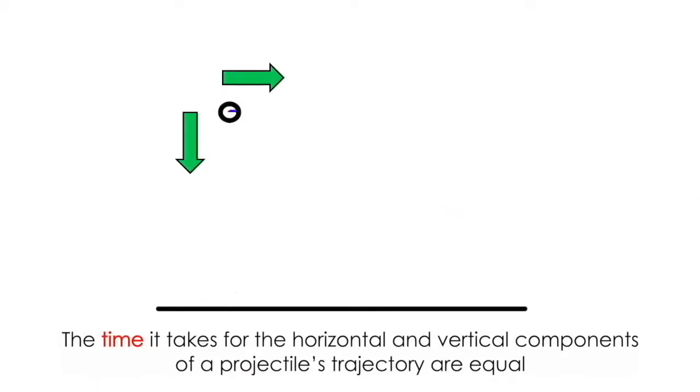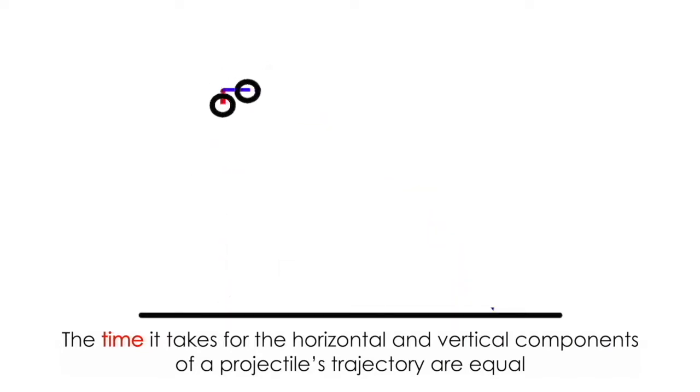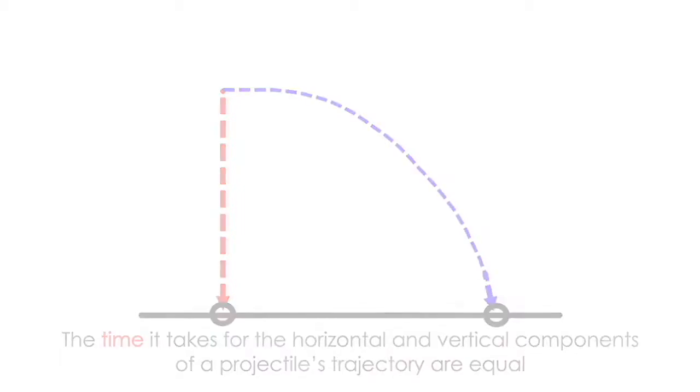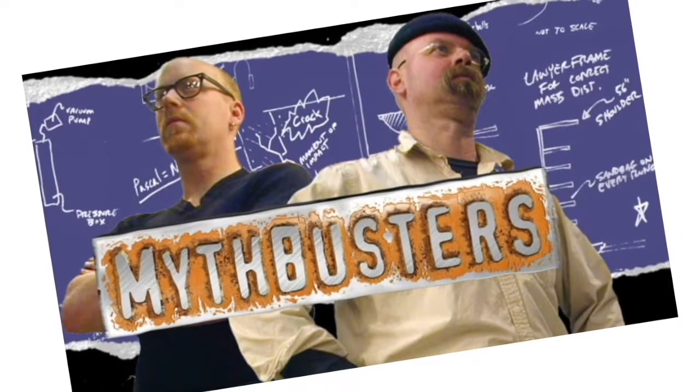A counterintuitive property of projectiles is that the time it takes for the horizontal and vertical components of a projectile's trajectory are equal. If you picture dropping a ball and throwing a ball horizontally, those two balls will hit the ground at the same time. Now I could spend all my time and money designing the ultimate experiment to prove this to you, but Mythbusters already did it and honestly it's super cool, so you'll have to check that out. I'll link the video in the description.